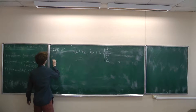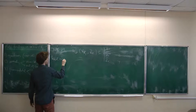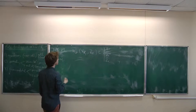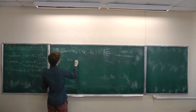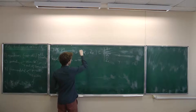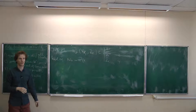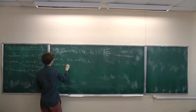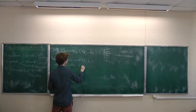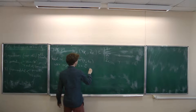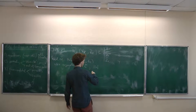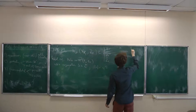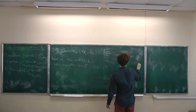And the Weil conjectures — which are a theorem here — in fact Deligne first proved the Weil conjectures for K3 surfaces before proving them for arbitrary varieties — say that Frobenius acts on H^i with eigenvalues λ. They are algebraic numbers, and they satisfy that for any embedding, their absolute value is q^(i/2). So in our case, absolute values equal 1, q, or q².